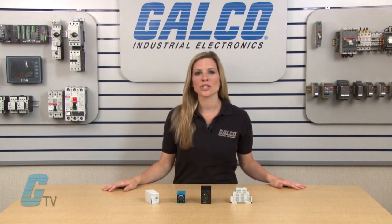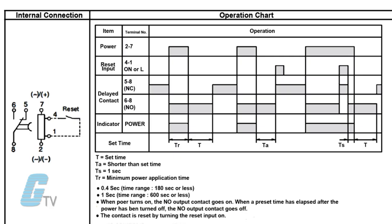Timing diagrams can differ between manufacturers in terms of how they want to show the inner workings of the relay. Diagrams usually display the power on, signal on, set time, and the on and off state of the contacts.